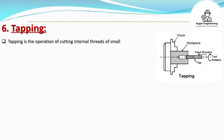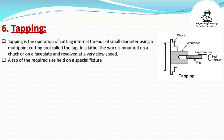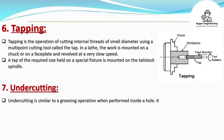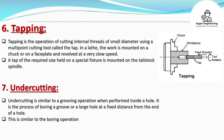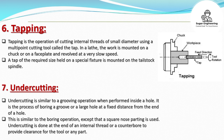Tapping is the operation of cutting internal threads of small diameter using a multipoint cutting tool called the tap. The work is mounted on a chuck or face plate and revolved at a very slow speed, while a tap of the required size held on a special fixture is mounted on the tail stock spindle. Undercutting is similar to a grooving operation performed inside a hole — it involves boring a groove or large hole at a fixed distance from the end of a hole, using a square nose parting tool, to provide clearance for a tool or part.